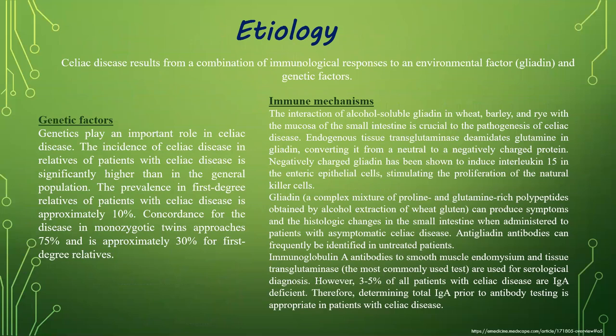Celiac disease results from a combination of immunological responses to an environmental factor and genetic factors. Genetics play an important role — the incidence in relatives of patients with celiac disease is significantly higher than in the general population. The prevalence among first-degree relatives is approximately 10 percent. Concordance for the disease in monozygotic twins approaches 75 percent and is approximately 30 percent for first-degree relatives.